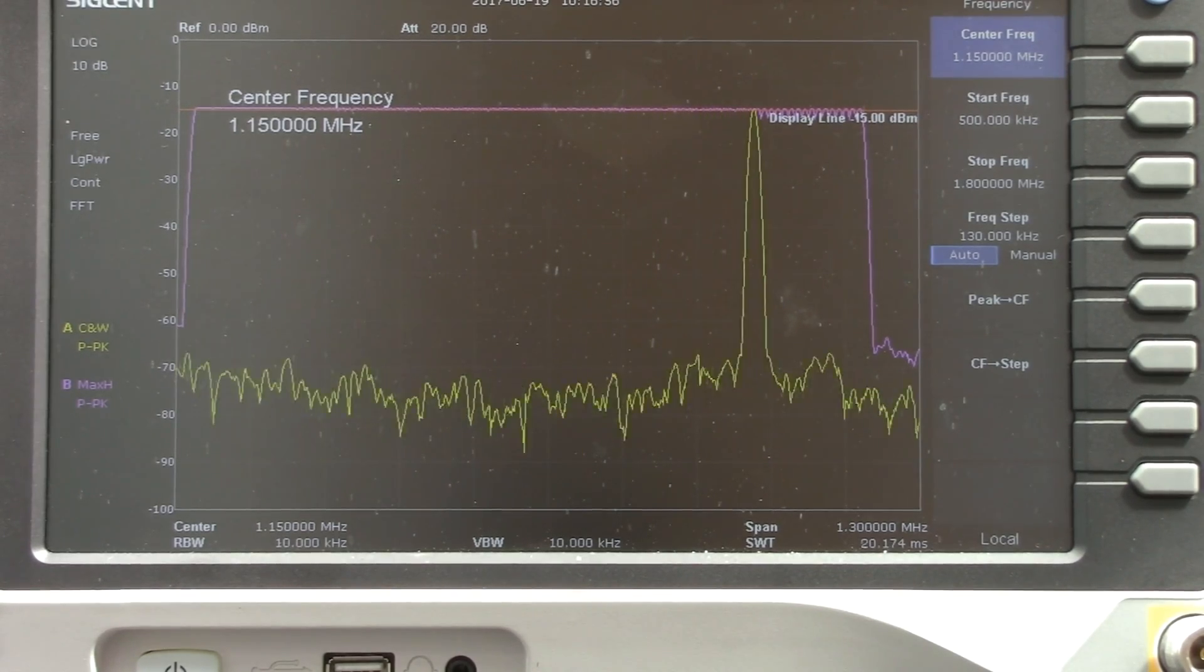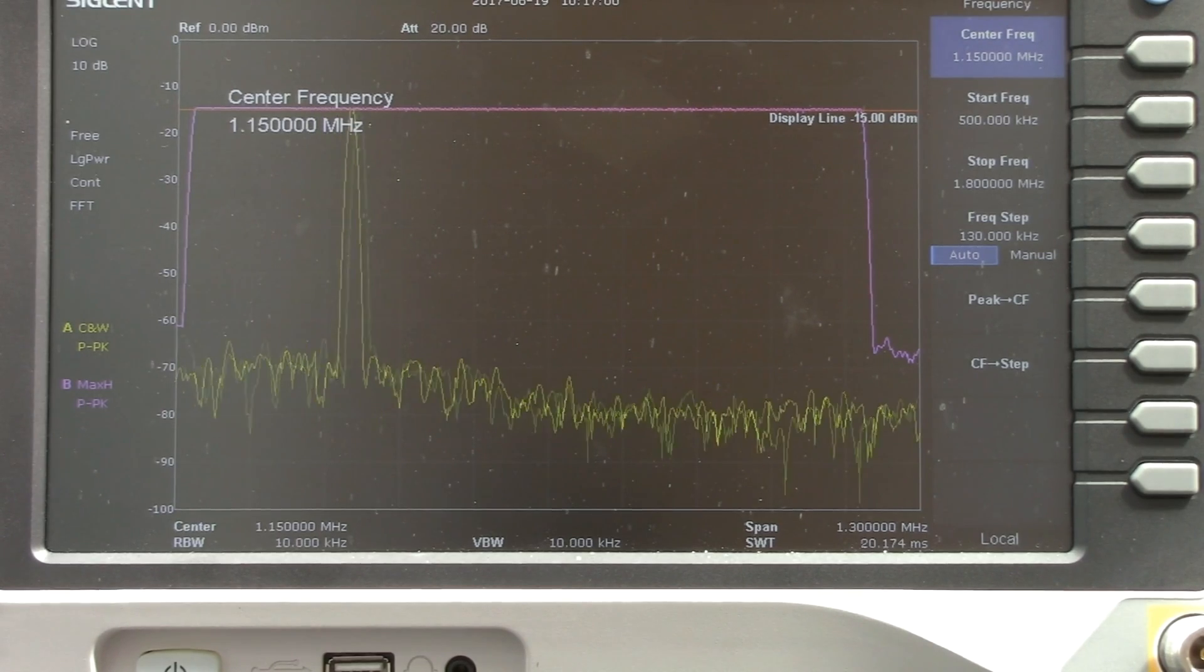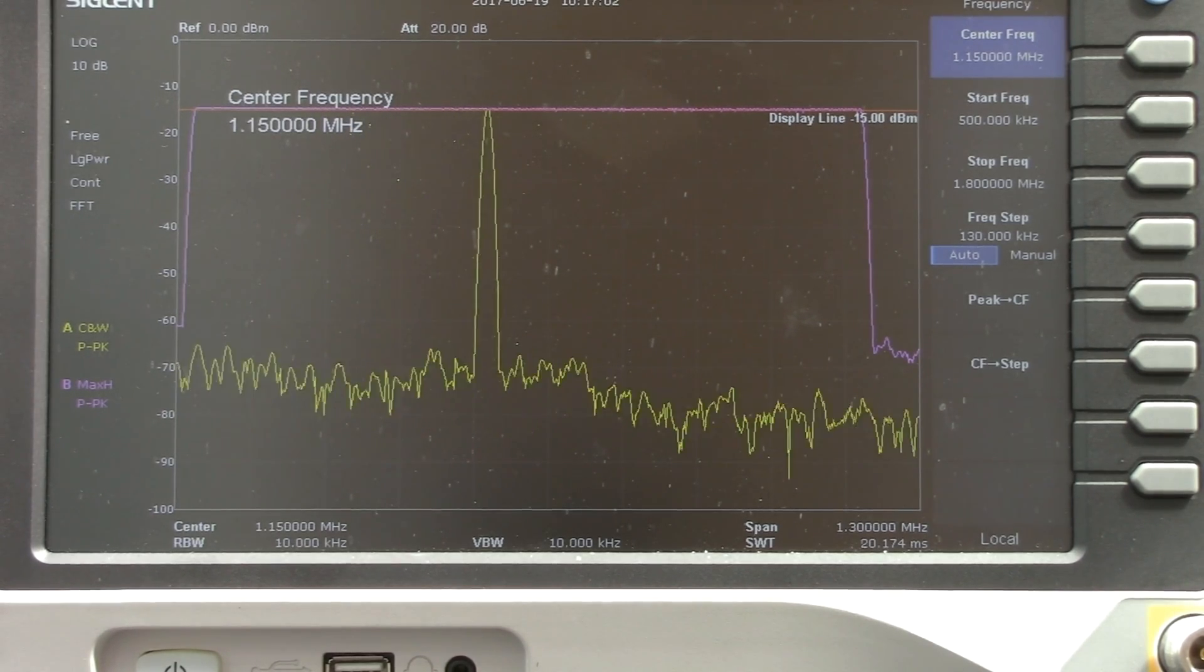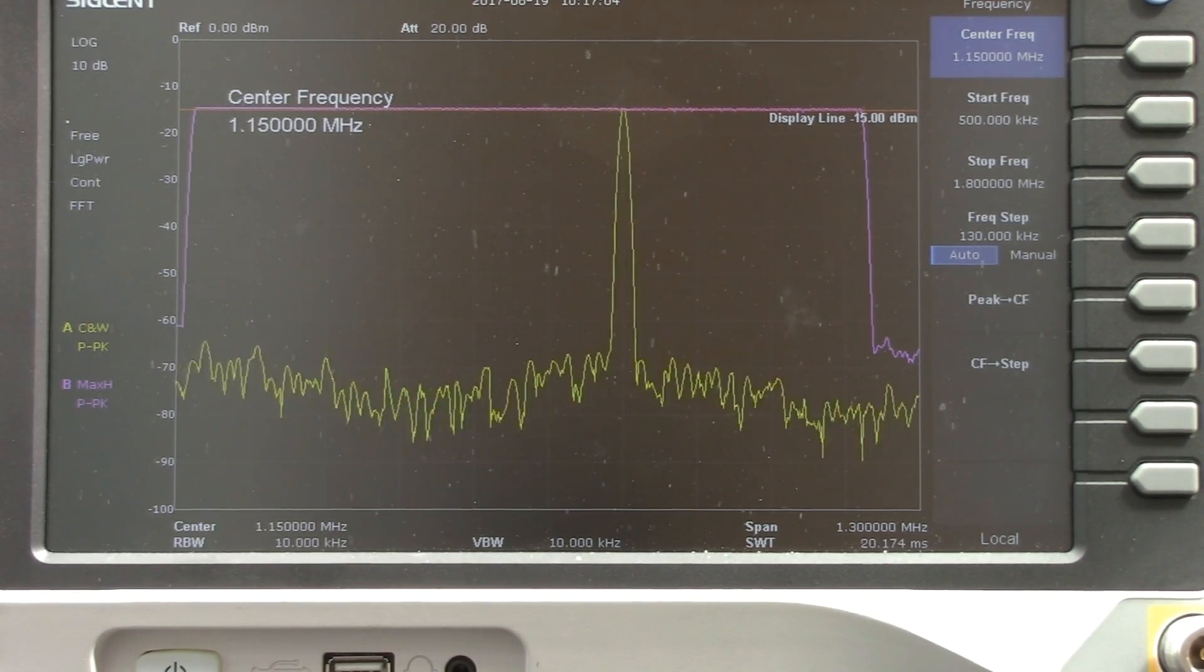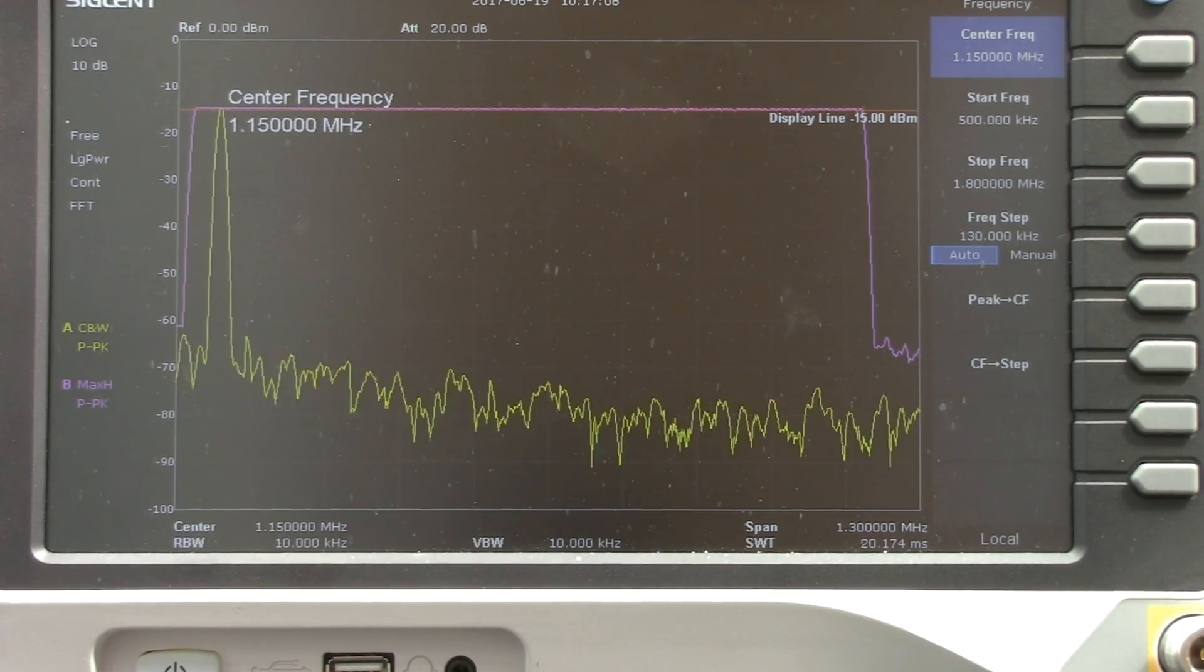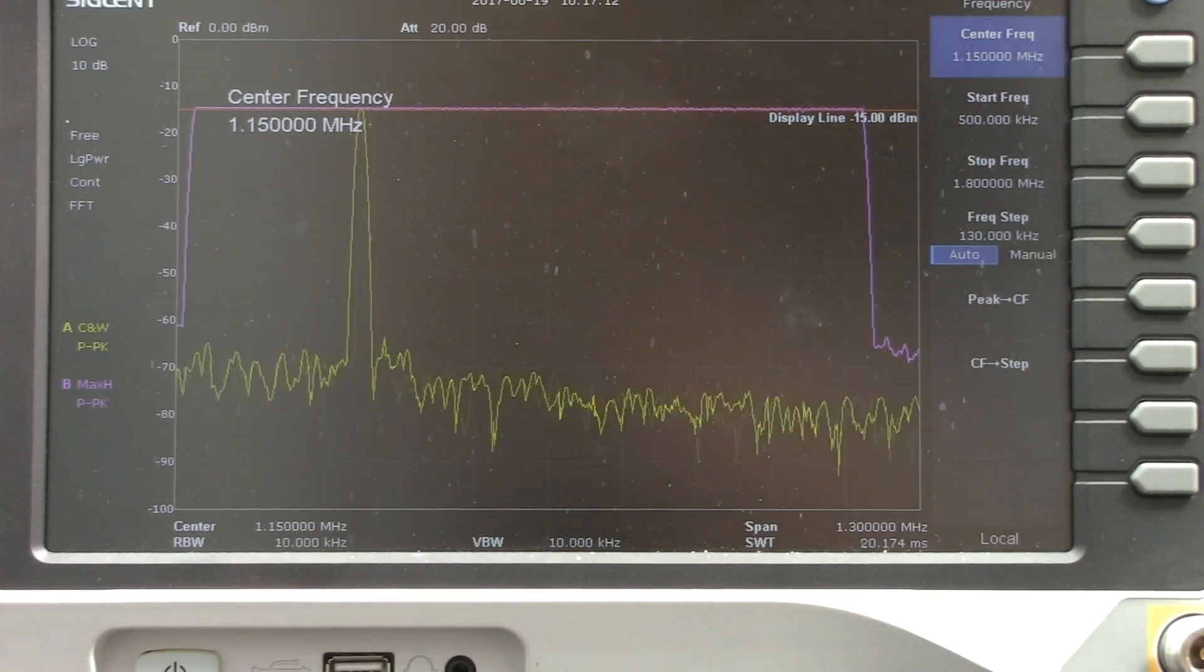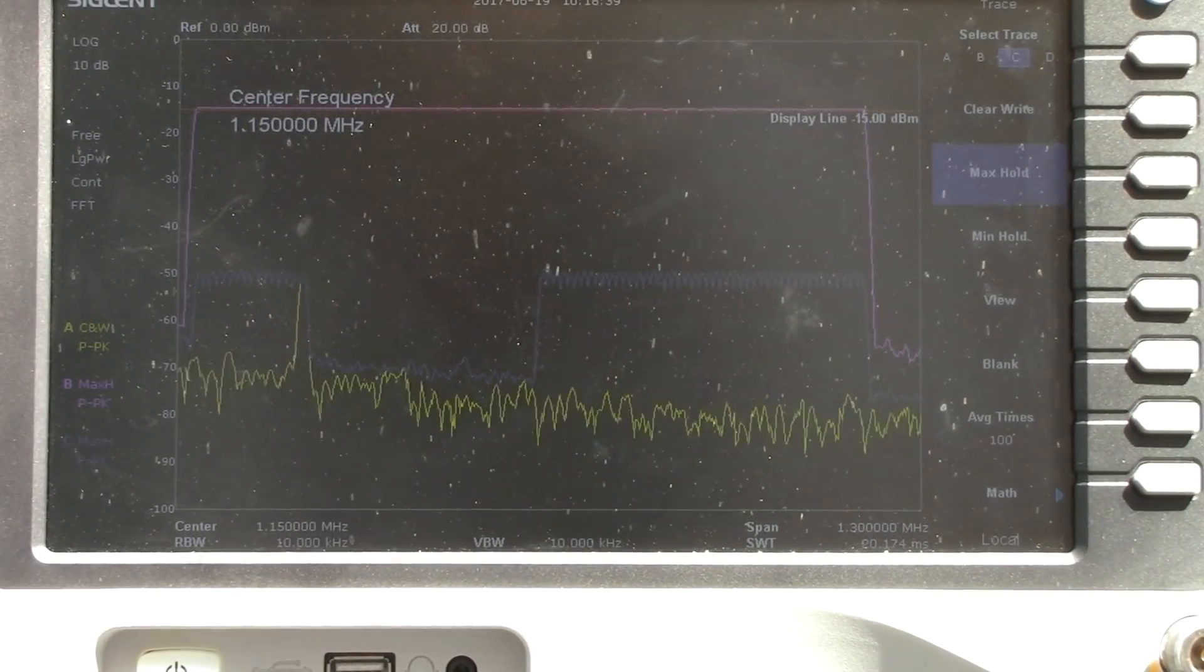And that pink is going to show us the max value in the max hold trace mode for this particular setup. And here now we're going to adjust the amplitude of the generator to minus 50 dBm here. I'll let that do a few successive scans. Take a closer look at the settings.